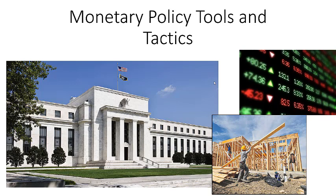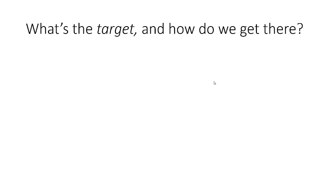Hello everybody. We're continuing with Monetary Policy and this time we're going to talk about how the Fed does its job. Previously, we learned about why the Fed exists and what its job is. Its job is primarily lender of last resort to the banking system and to engage in monetary policy to hopefully achieve macroeconomic stability. So how exactly does the Fed go about doing that?